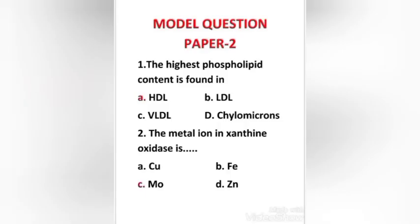First question: the highest phospholipid content is found in — HDL, LDL, VLDL, or chylomicrons? The right answer is option A. The highest phospholipid content is found in HDL. HDL particles are commonly referred to as good cholesterol because they transport fat molecules out of artery walls, reduce macrophage accumulation, and thus help prevent or even regress atherosclerosis.